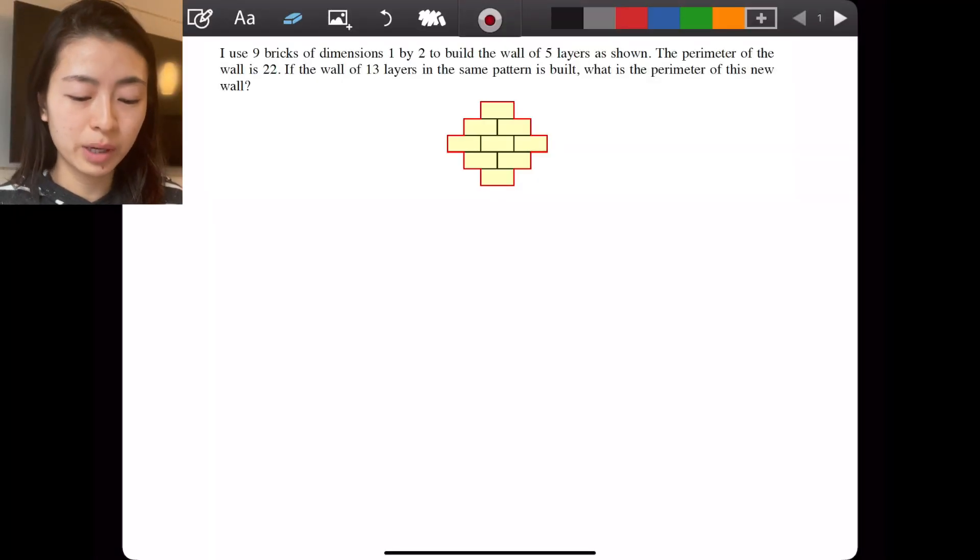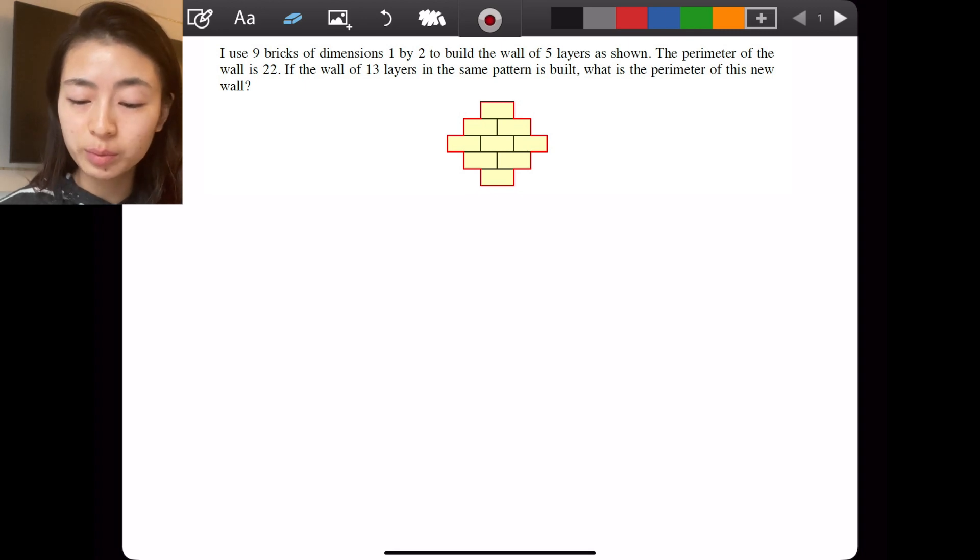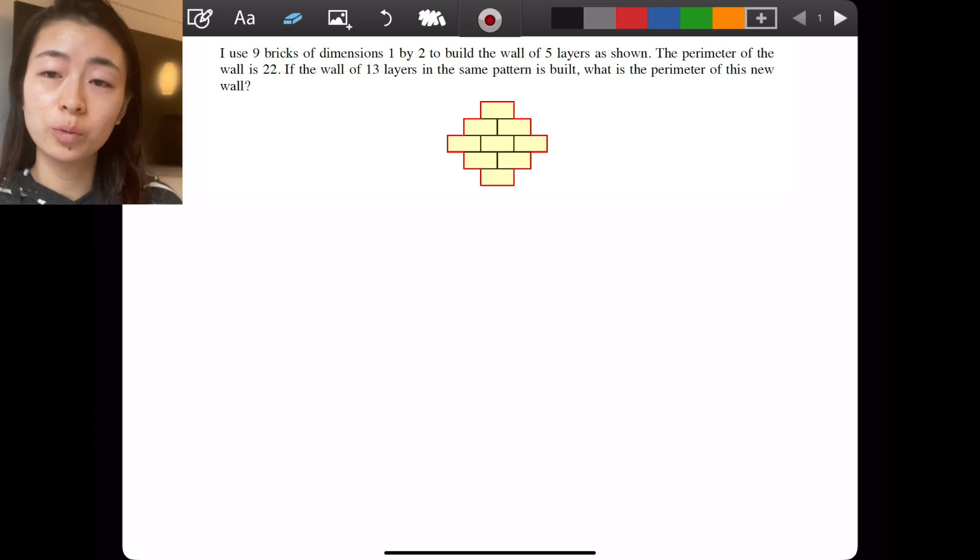I use nine bricks of dimensions one by two to build the wall of five layers as shown. The perimeter of the wall is 22. If the wall of 13 layers in the same pattern is built, what is the perimeter of this new wall? Okay so what does this problem actually mean? So here's where you pause the video to make sure that you can actually state it in your own words.